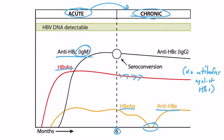Looking at the E antigen line, it did not dip down at the five-to-six-month mark as it did in the recovery diagram. Instead, it continues well into the chronic phase before finally dipping down, at which point the patient develops antibodies against the E antigen. This makes sense because the patient was unable to clear the infection, so the virus continues replicating longer than expected — and the E antigen indicates high viral replication. When these chronic patients do develop antibodies against the E antigen, they have low transmissibility and are not as contagious.